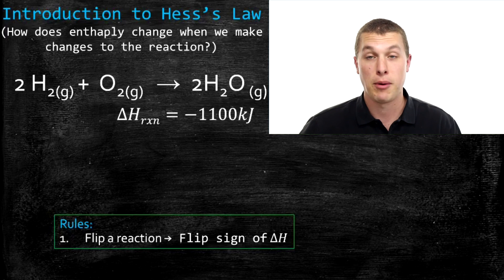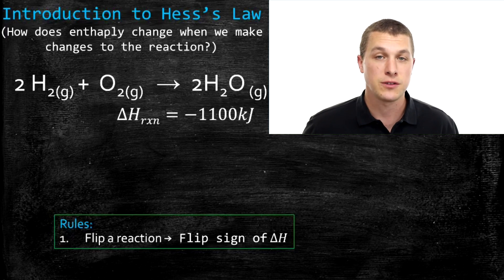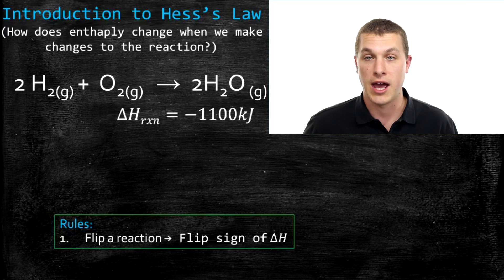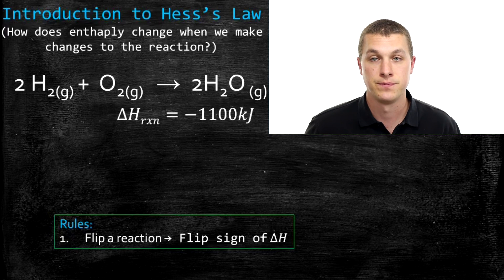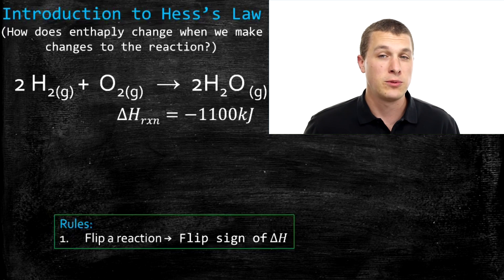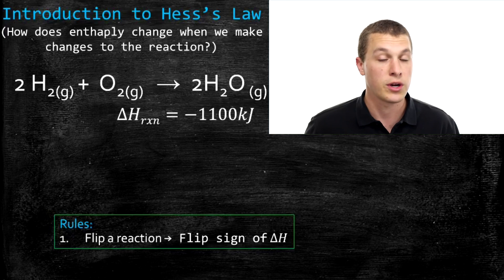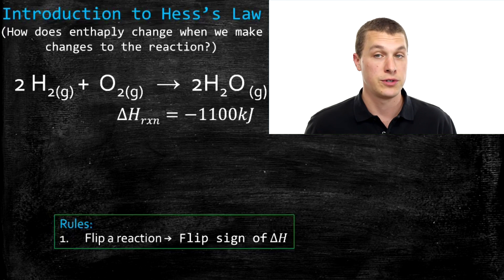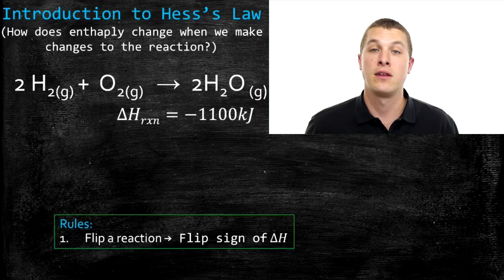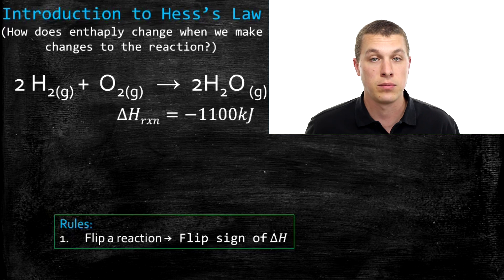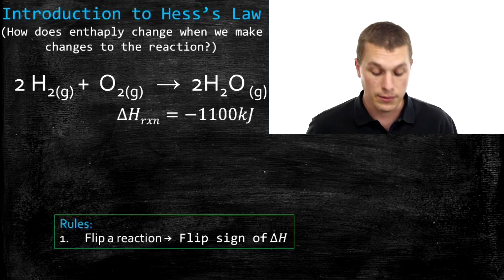Welcome to Real Chemistry. Today we're going to talk about Hess's Law. Hess's Law is basically a series of rules that allows us to manipulate our chemical reaction, and it tells us how that changes the enthalpy for that reaction. We're going to go through a total of three rules, and then in the next video, Hess's Law practice problems, we're going to use them to solve problems.